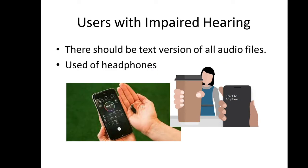For users with impaired hearing, one rule is that there should be a text version of all audio files, so that those with impaired hearing can still read what is contained in the audio files. We can also make use of headphones — if they have only impaired hearing but can still hear, we can use headphones and increase the volume a little bit.